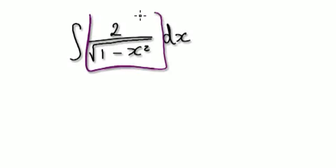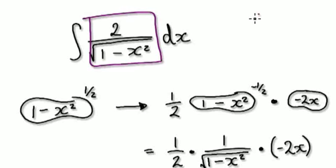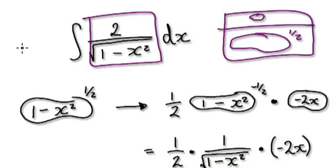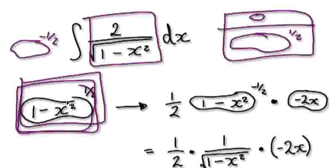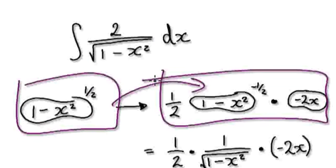To try and find the indefinite integral of this, you could guess this. Because at the moment you would visualize this as something over this thing here to the power of a half, which can be written as something to the power of minus a half. You could guess this, but when you differentiate it, it will give you this whole thing here.